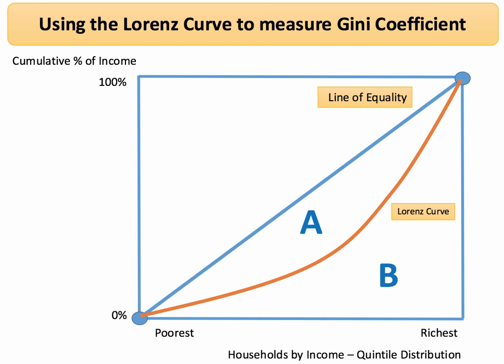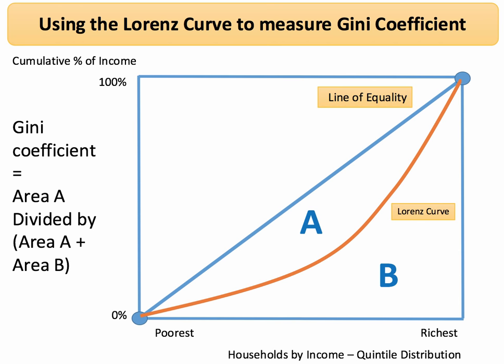Finally, we use the Lorenz curve to calculate a number representing inequality called the Gini coefficient — we have a separate video on this. The Gini coefficient is calculated as area A, which lies between the Lorenz curve and the line of equality, divided by the whole area underneath the line of equality (A plus B). So it's A divided by (A + B). If there was no inequality the curve would be a straight line with a Gini coefficient of zero. If there was perfect inequality, the Lorenz curve would run along the x-axis and then vertically up to the top right.